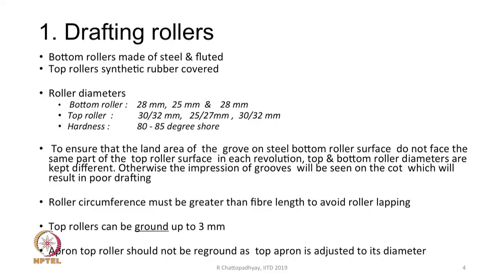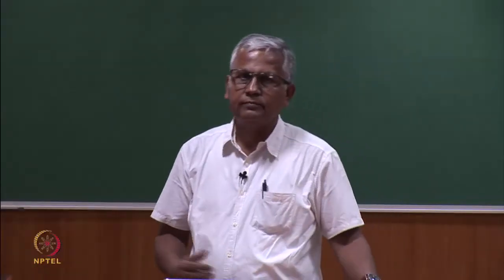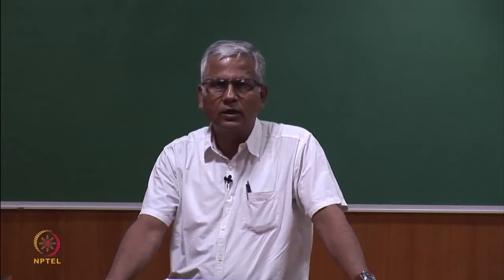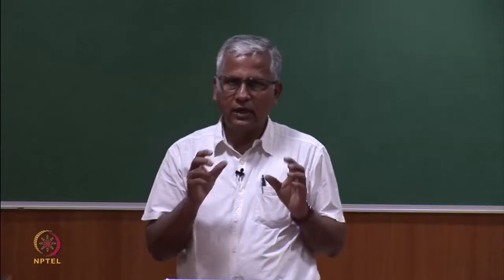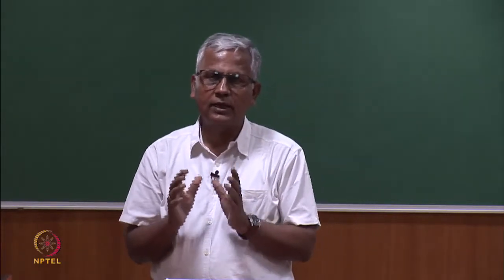The roller diameters are as follows: bottom rollers are typically 28, 25, and 28 mm; top rollers are 30 or 32 mm for the front, 25–27 mm for the middle, and 30–32 mm for the back. The hardness of the synthetic rubber cot is 80 to 85 degrees Shore. The roller circumference must be greater than the fiber length to avoid roller lapping — larger diameter rollers mean less lapping possibility.